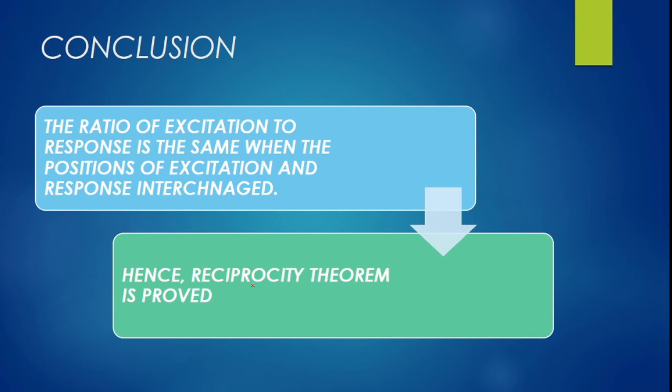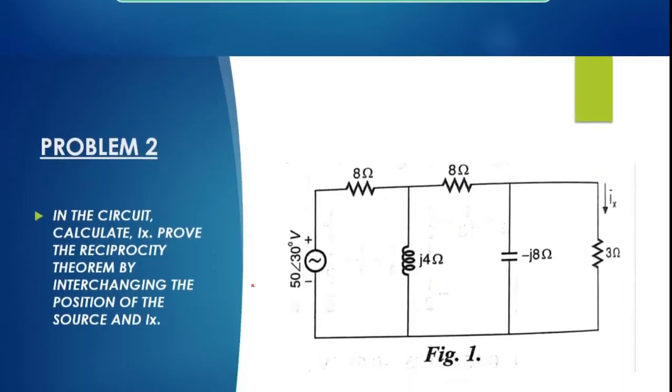I hope you are clear on how to verify the reciprocity theorem. First, keep the source at one port and measure the response at the second port, then find the ratio. Next, interchange the positions of excitation and response and check whether the ratio of input to output is the same. If both ratios are the same, we conclude that the reciprocity theorem is verified.